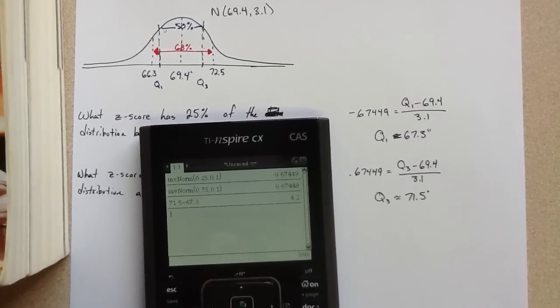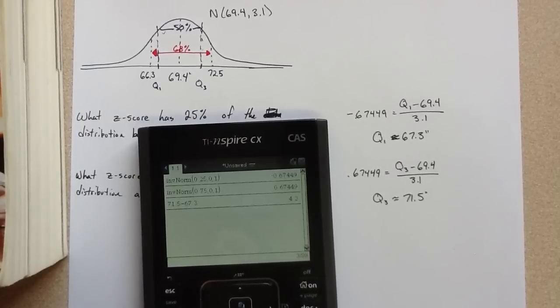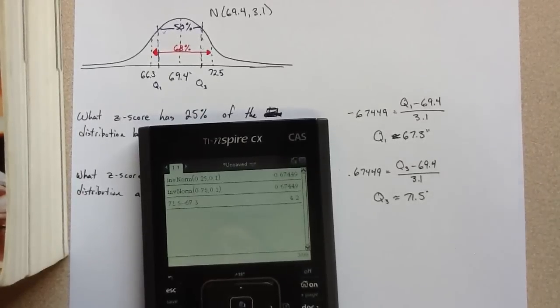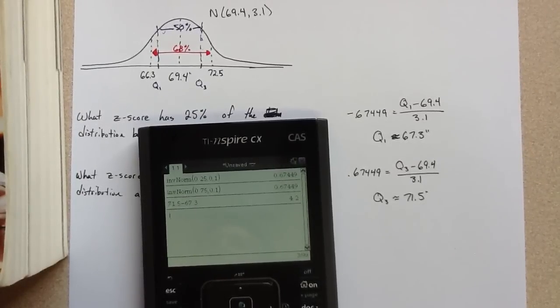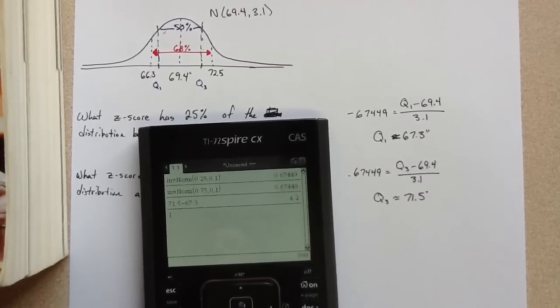Alright, so that's how you can use the information, mean and standard deviation, to find the IQR for a normally distributed distribution. This wouldn't work if it wasn't symmetric and unimodal, but in this case, since it is, we can do that.